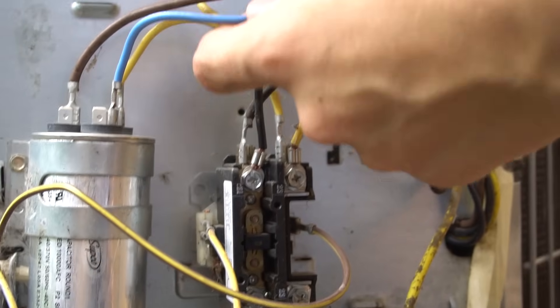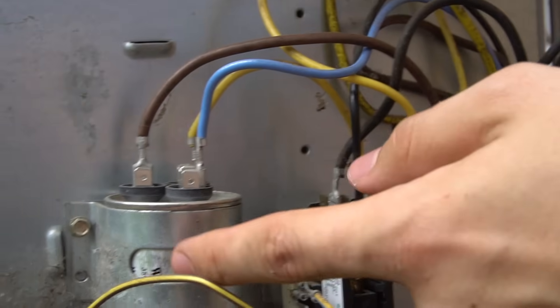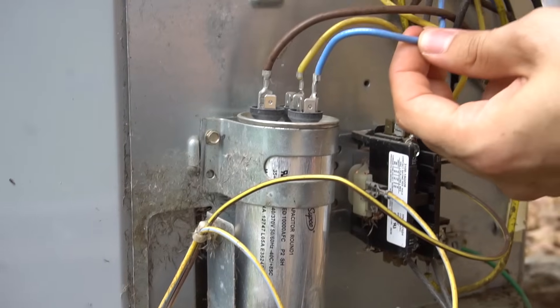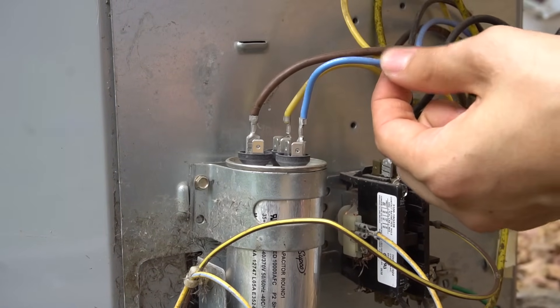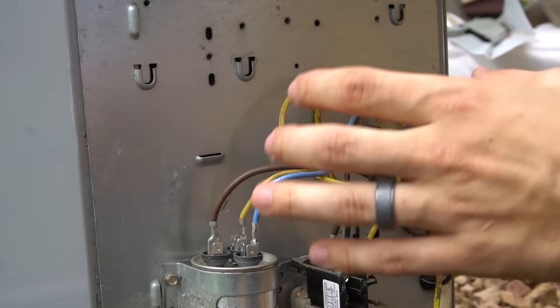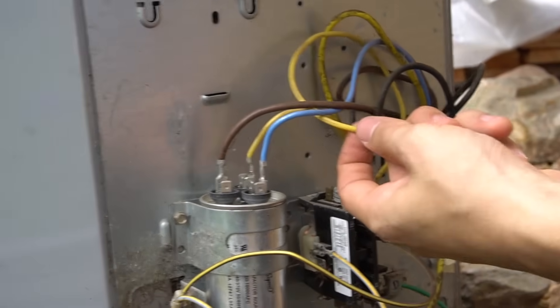And the last wire is going to go to the Herm section on your dual run capacitor. And many times the wire going to the capacitor will be blue, just like this one is on this unit. But different air conditioners will have different color wires.